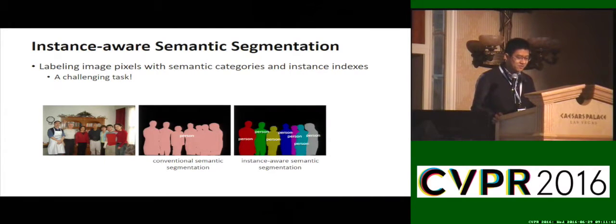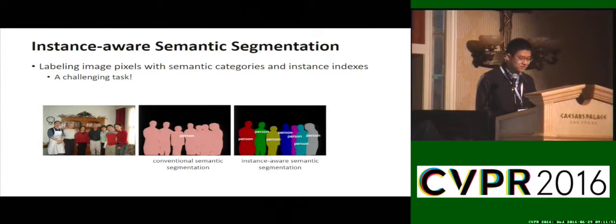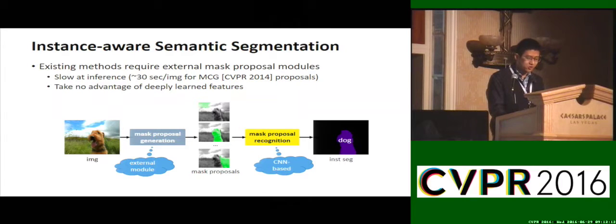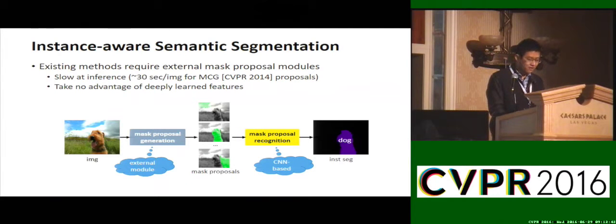The task of instance-aware semantic segmentation requires annotating each image pixel not only with its semantic category, but also with the corresponding instance index. Conventional FCNs are designed to predict category labels for each pixel but are unaware of individual object instances. Accurate and fast instance-aware semantic segmentation is still a challenging problem. Previous CNN-based methods all require mask proposal methods that are slow at inference time — for example, the prevalent MCG method takes about half a minute to compute mask proposals on an input image. These mask proposal methods take low advantage of deeply learned features or large-scale training data and may become a bottleneck for segmentation accuracy.